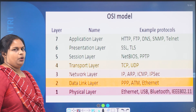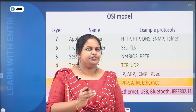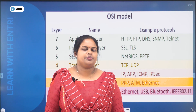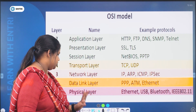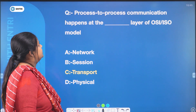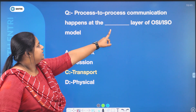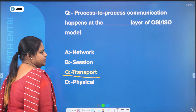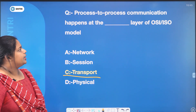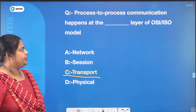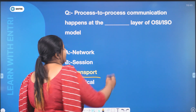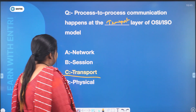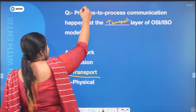So, if you are using the OSI model, the process-to-process communication is possible at the transport layer. This is the process-to-process, end-to-end connection handled by the transport layer.